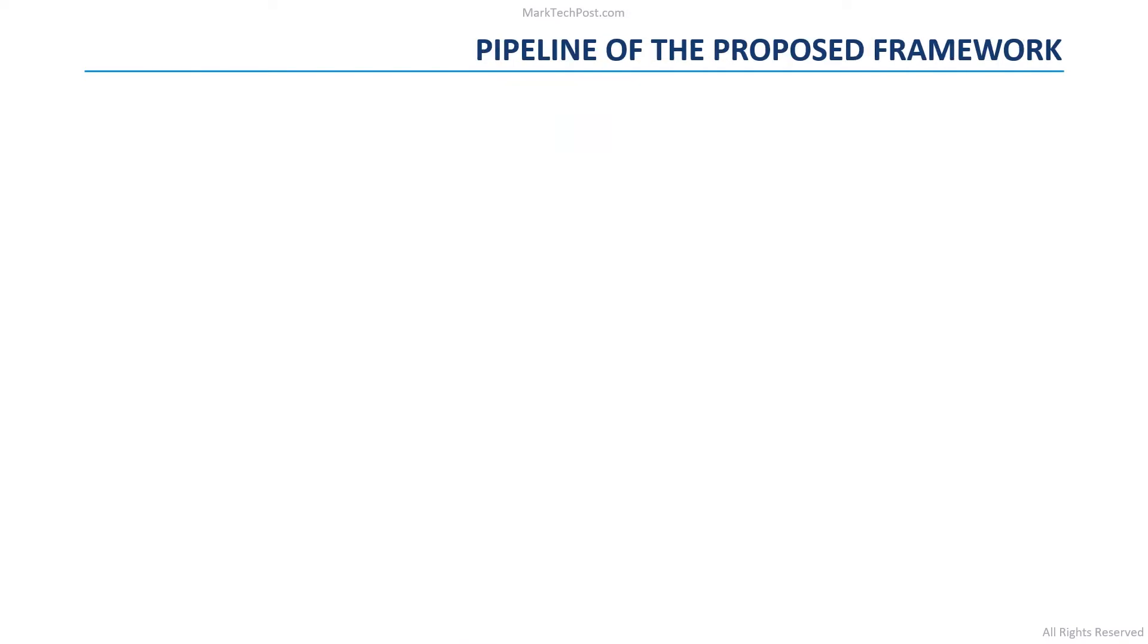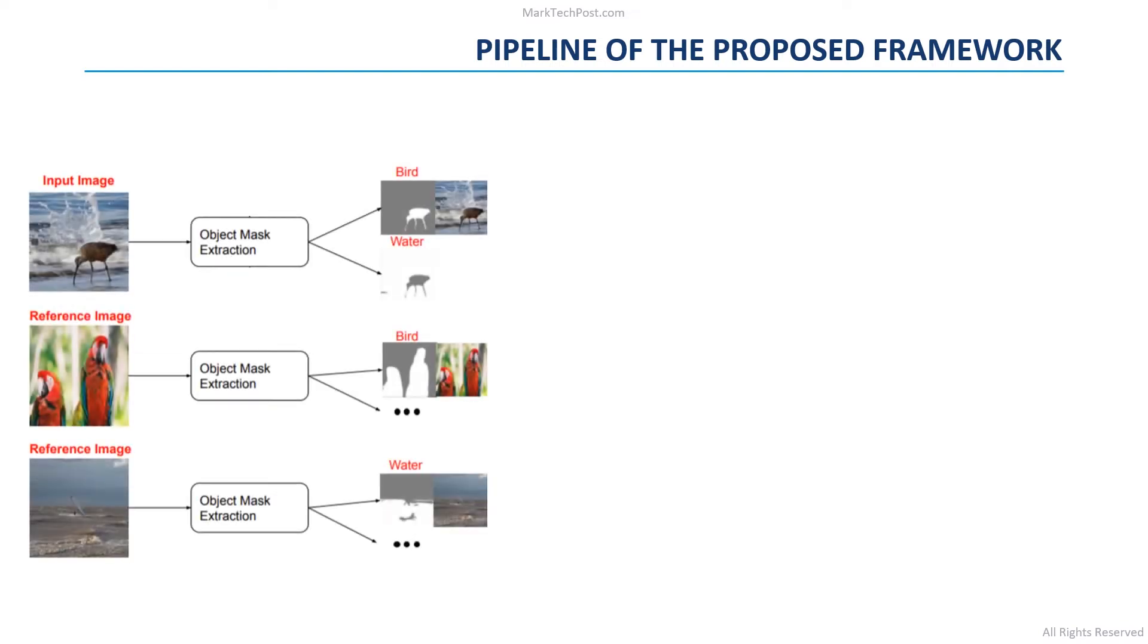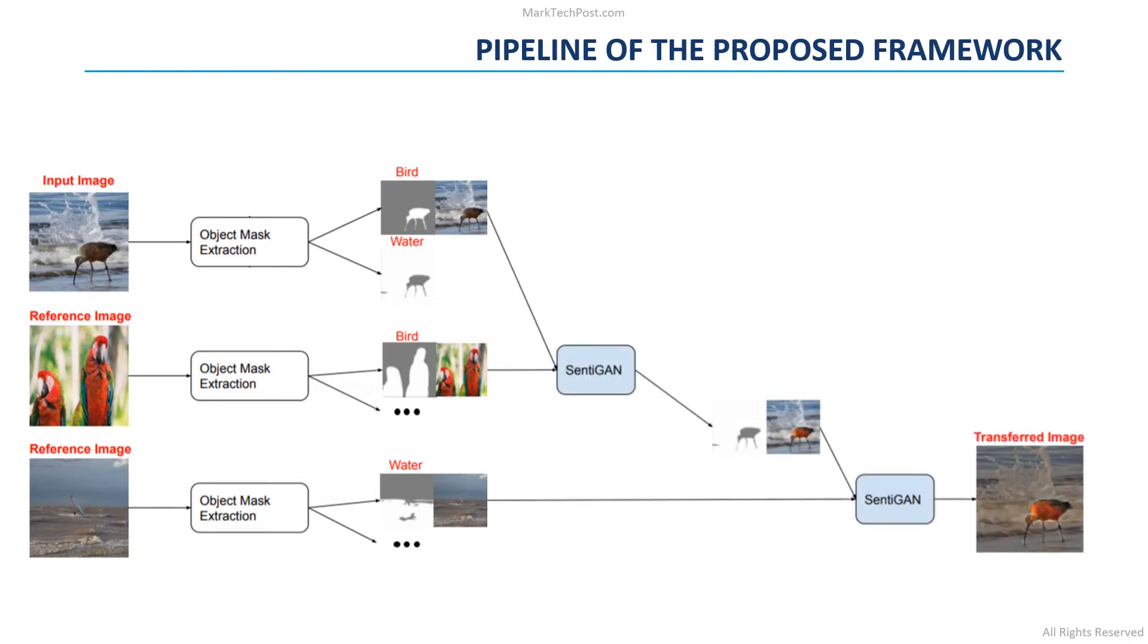To address this challenge, the researchers propose a framework that performs image sentiment transfer at the object level. In a first step, given an input image, the framework uses image captioning and semantic segmentation models to detect the objects of the figure, extracting their pixel level masks. In a second step, for each detected object, its sentiment is transformed based on a specific reference image that contains the same object.